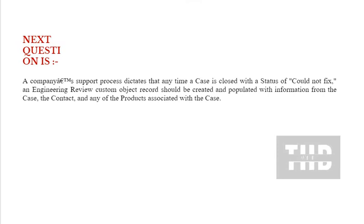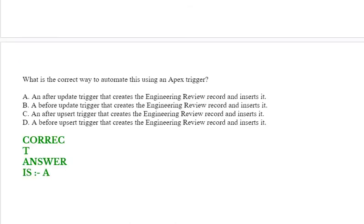Next question: a company's support process dictates that anytime a case is closed with a status of 'could not fix,' an engineering review custom object record should be created and populated with information from the case, the contact, and any of the products associated with the case. What is the correct way to automate this using an Apex trigger? Option A: an after update trigger that creates the engineering review record and inserts it. Option B: a before update trigger that creates the engineering review record and inserts it. The correct answer is option A.